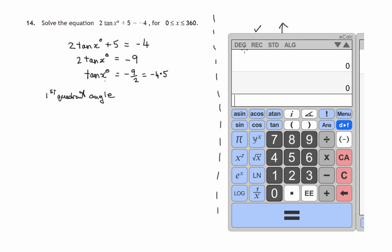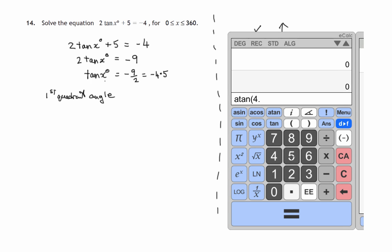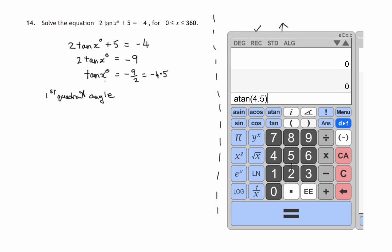Now I'm checking that my calculator is in degree mode. It's got a deg up here. Yours might be D, but somewhere on the screen it should tell you that you're in degree mode. If you're not, change it to degree mode. So I'm pressing this. What is the angle whose tangent is 4.5? Remember I'm forgetting about that negative. I'm just pretending I'm in the first quadrant just now.